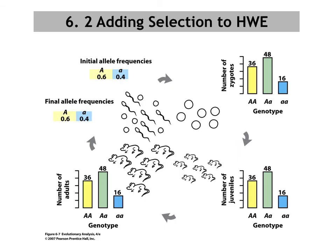Now let's look at one of those evolutionary mechanisms — natural selection — and see how we could numerically quantify its effect. Here is the slide showing a population in Hardy-Weinberg equilibrium, starting with initial allele frequencies, going through the full life cycle, and arriving at the same final allele frequencies: big A is still 0.6 and little a is still 0.4. This is a population in Hardy-Weinberg equilibrium.